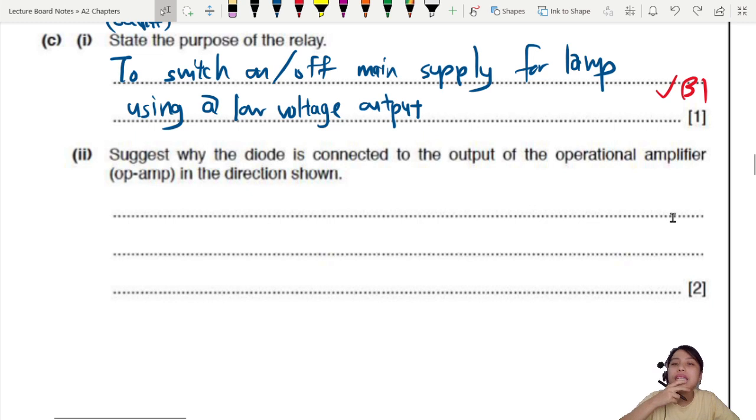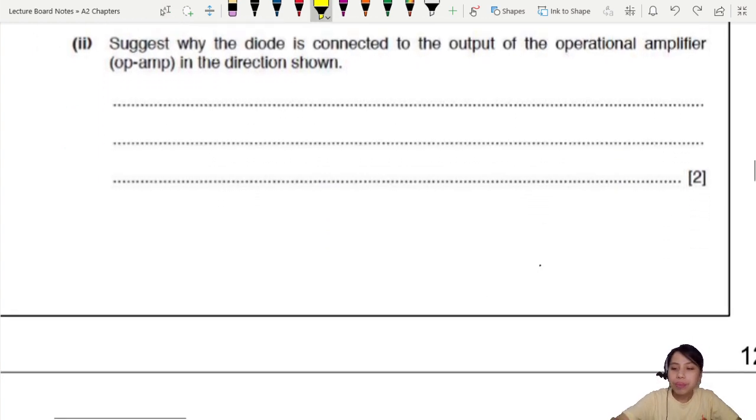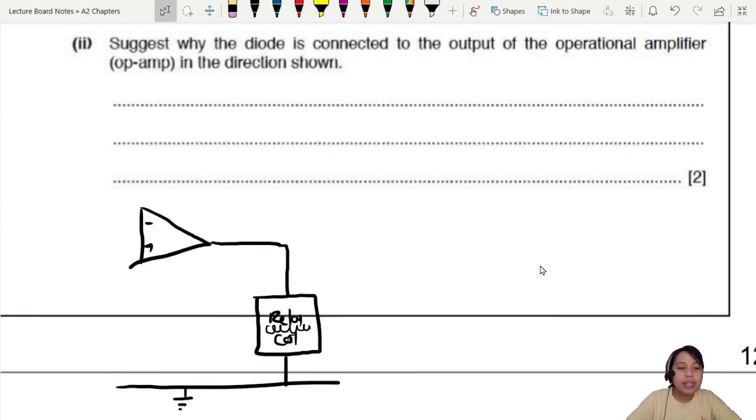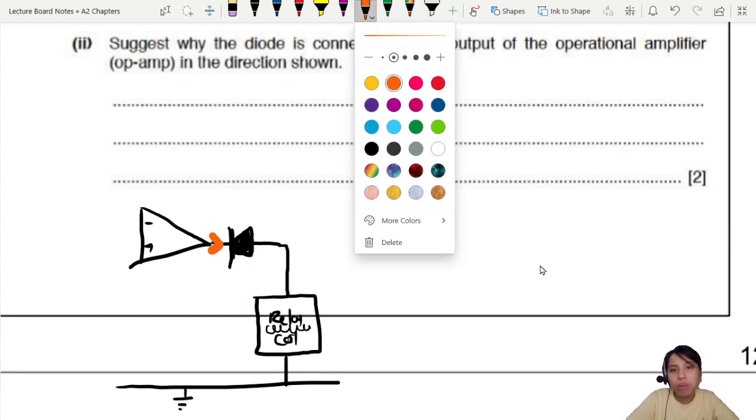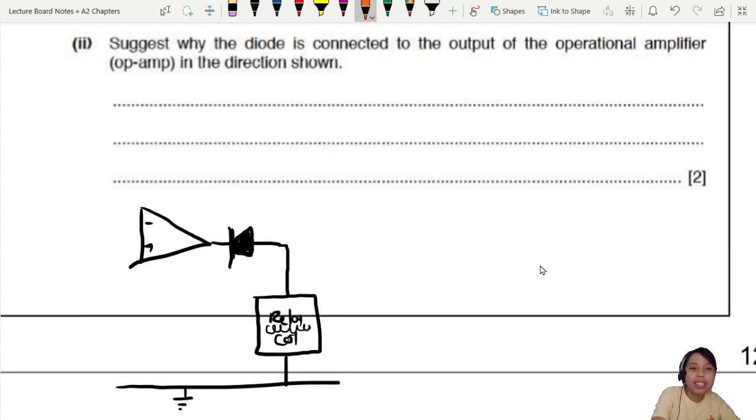Suggest why the diode is connected to the output of the op amp in the direction shown. I'm going to redraw it down here so we don't keep scrolling up and down. There's our op amp setup and the diode that they draw in the circuit is a very interesting one, it's pointed this way. Why is it connected in such a way? Well, think about it this way. When will the relay switch on? If current is trying to flow like this, will the diode allow it to flow? No, the diode will not activate. So the only way you have current flowing is if it is flowing in this direction.